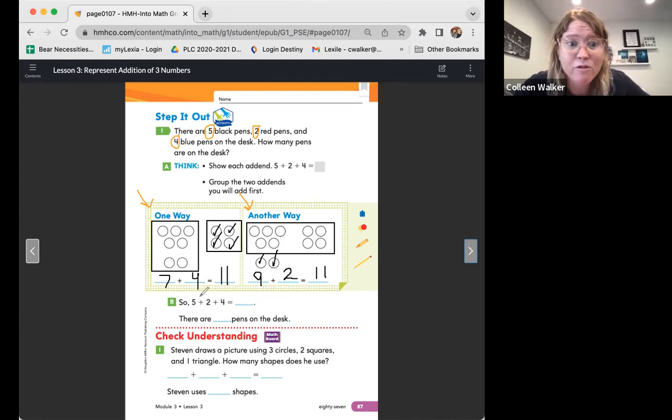So five plus two plus four equals eleven. There are eleven pens on the desk.